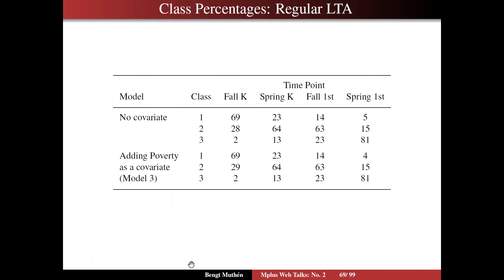Finally, take a look at what difference it makes to bring in a covariate. We look at class percentages for this regular LTA analysis. Without a covariate, you have classes 1, 2, 3 at the four time points, starting with 69% in the lowest class. But when we add poverty as a covariate in the main effect model 3, these class percentages remain almost intact — no change at all, really. So in this case, bringing in a covariate in this one-step analysis does not change the class formations at all.